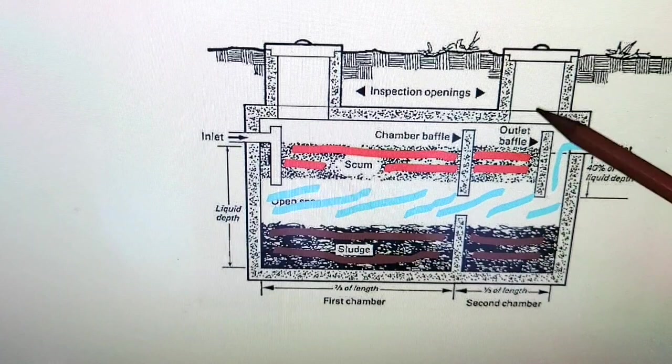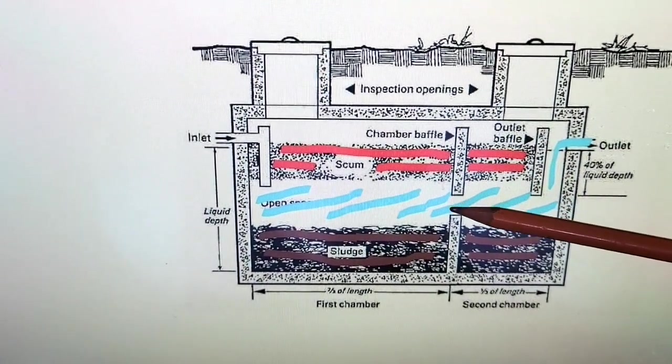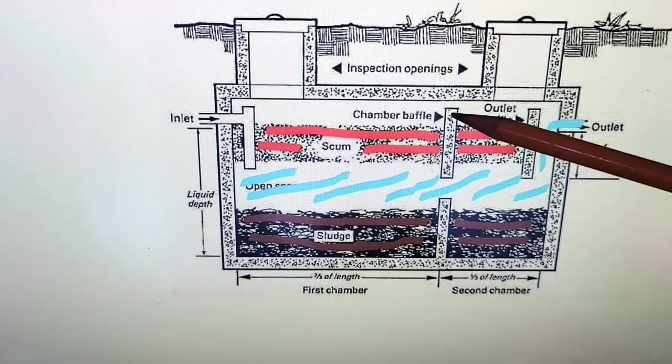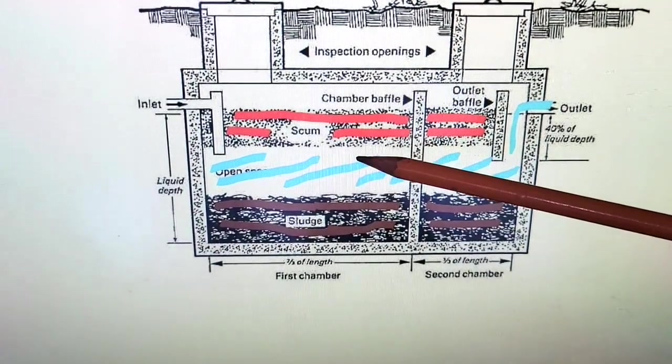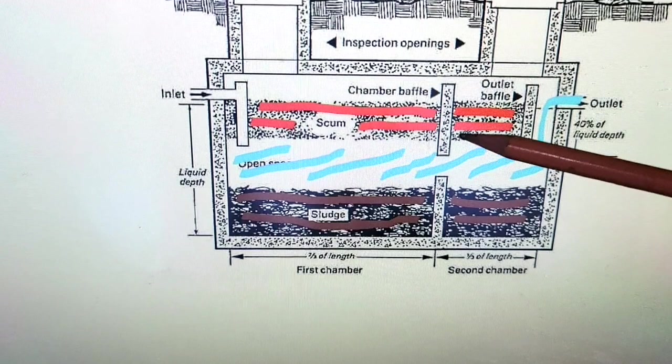That box is split right in the middle with a wall right here. Center baffle, it's called. That center baffle goes to the bottom. It's a solid cement wall. It does not quite go to the top. There's a bit of room at the top in case the first chamber overflows, you can go over the top. Shouldn't do that, but it can.